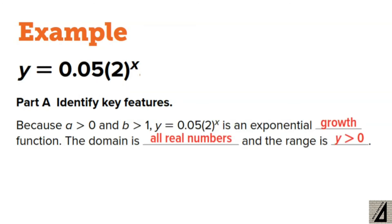So here is the exponential function of this situation. Part A identifies the key features: the domain, range, and end behavior. Because a is greater than 0, which is 0.05, and b is greater than 1, that is 2, y equals 0.05 times 2 to the power x is an exponential growth function. The domain is all real numbers, and the range is all y positive numbers, which is greater than 0.